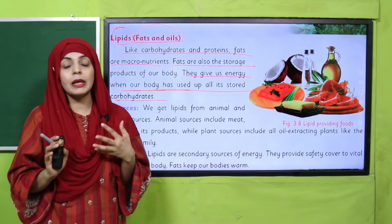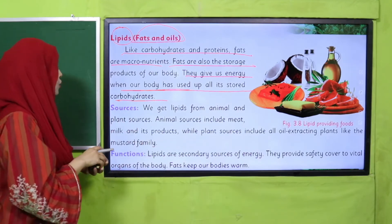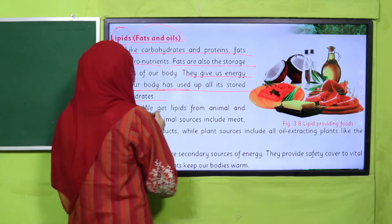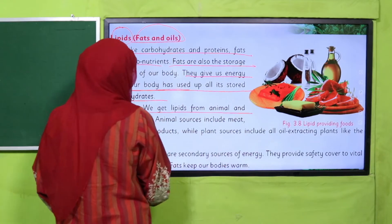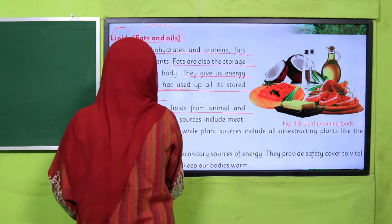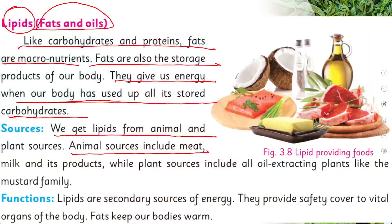Fats are important for the body. The sources of fats come from both animal and plant sources. Animal sources include meat, milk, and its products, while plant sources include all oil-extracting plants like the mustard family and sunflower.